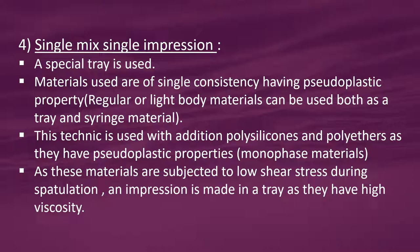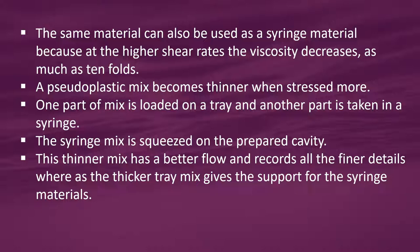Single mix single impression: a special tray is used and materials used are of single consistency. Having pseudo-plastic property, regular or light body materials can be used both as a tray and syringe material. This technique is used with addition polysilicones and polyethers as they have pseudo-plastic (monophase) properties. As these materials are subjected to low shear stress during spatulation, an impression is made in a tray as they have high viscosity. The same material can be used as syringe material because at higher shear rates the viscosity decreases as much as ten-fold. One part of the mix is loaded on the tray and another part is taken in the syringe. The syringe mix is squeezed on the prepared cavity — this thinner mix has better flow and records finer details, while the thicker tray mix gives support.